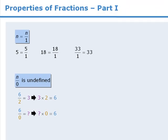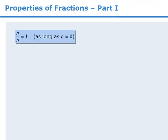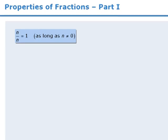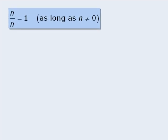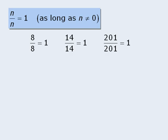Another property says that n over n is always equal to 1. Notice that we have the condition here that n cannot equal 0, since 0 over 0 does not equal 1. In fact, 0 over 0 is undefined. Here are a few examples that demonstrate this property.